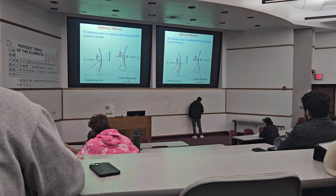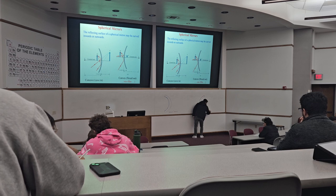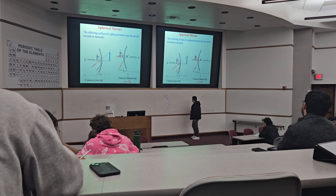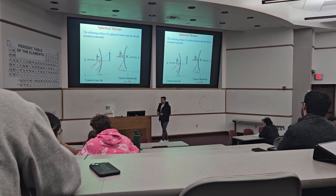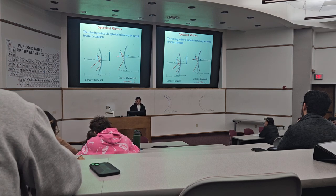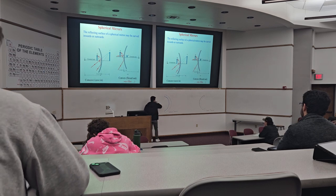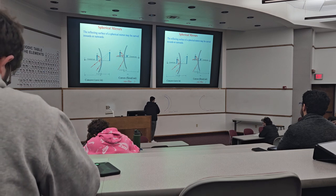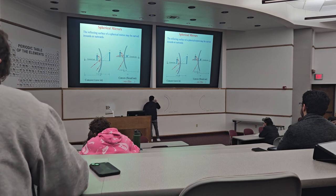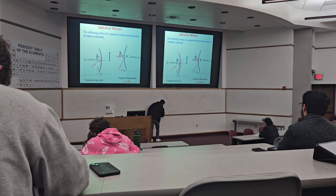This is the final part of the mirror. There are two different sets — one is concave, like this, and there is another convex, like this. They are part of the spherical mirror. You can consider that this mirror is a small section of a sphere.